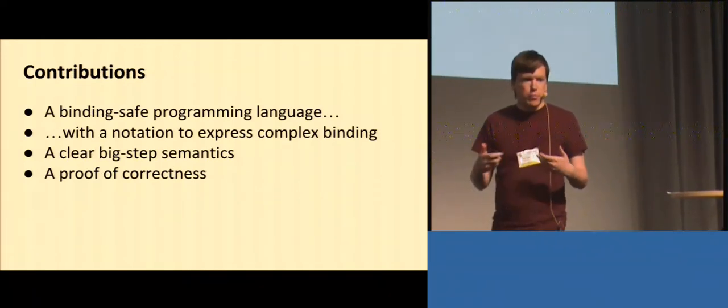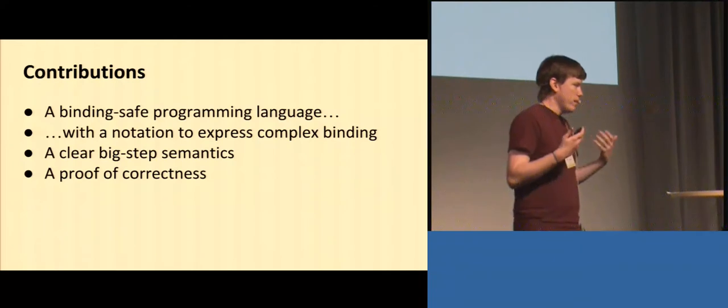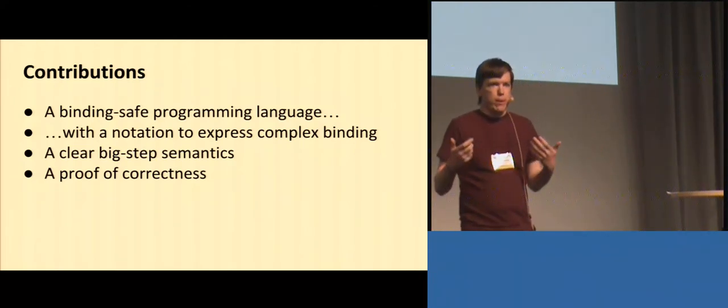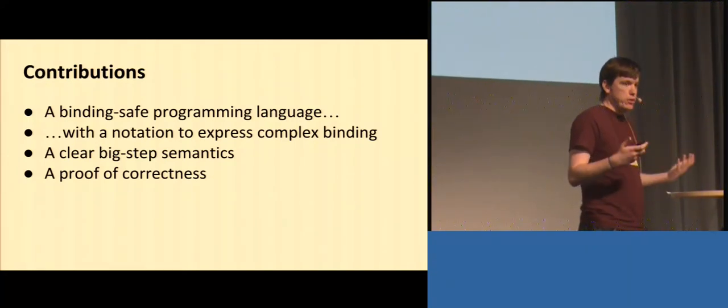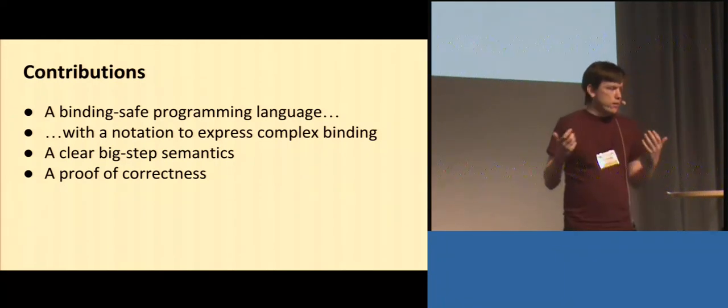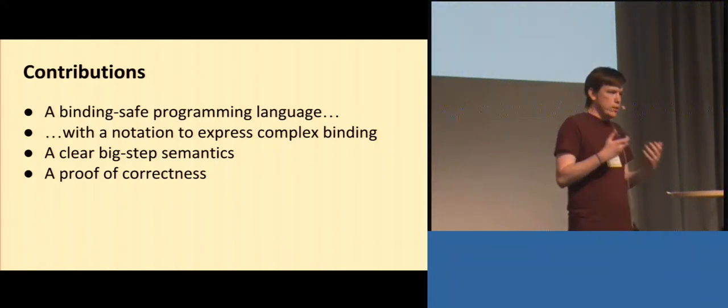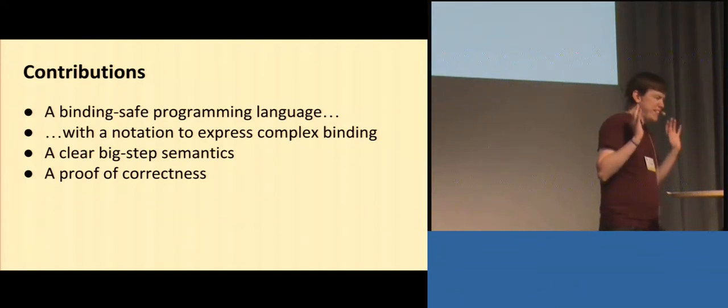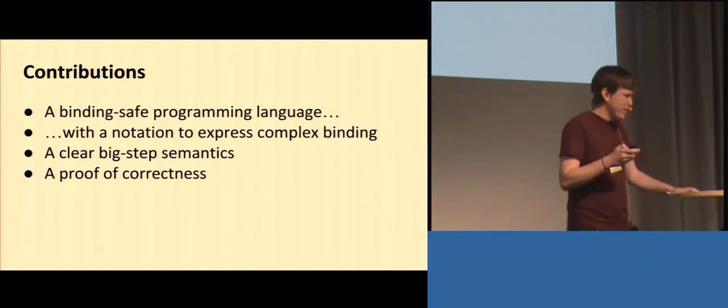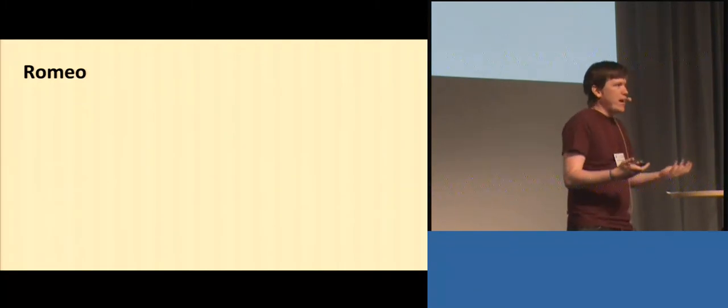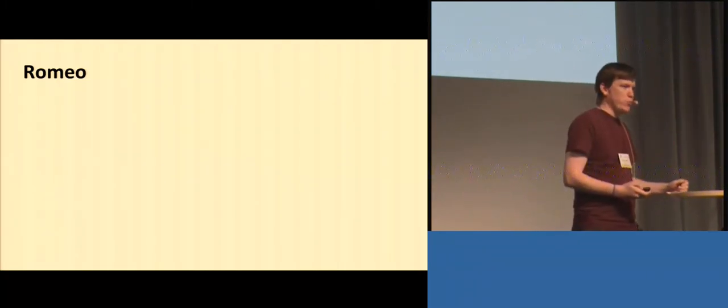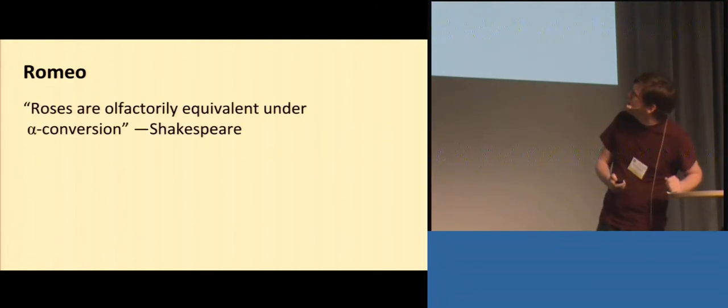So to this end, we've developed a programming language, which is binding safe, just like all the others, and also is capable of handling binding forms that have much more complexity than before. We've developed a notation to express these bindings. We've given a clear big step semantics, and we've shown it to be binding safe with a proof of correctness, which we made as succinct as possible, and it's 20 papers. We call our language Romeo. Romeo is, of course, a reference to the work of a great nominal logician who once said, what's in a name? That which we call a rose by any other name would smell as sweet. Or something like that.